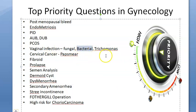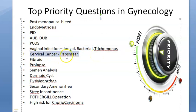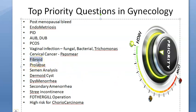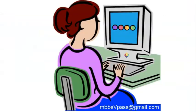Vaginal infection can be fungal, bacterial, or Trichomonas. For bacterial vaginosis, remember the Whiff test, Amsel's criteria, and clue cells. Cervical cancer is very very important - know the Pap smear, the transformation zone, the old and new squamocolumnar junction, and the stages of cervical cancer. Fibroid - leiomyoma - is very important: know intramural, submucosal, and subserosal types.